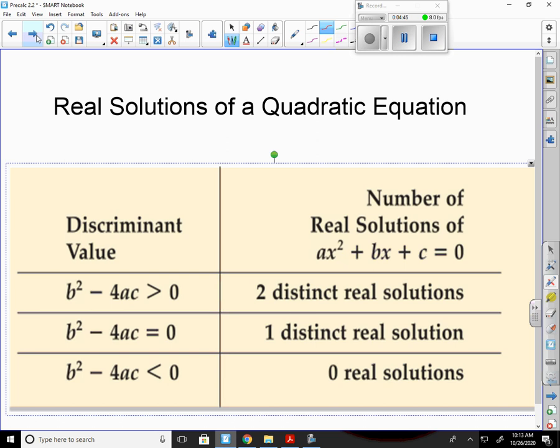If it's equal to zero, then there's only one distinct real solution. And if it's less than zero, then there are no real solutions. And so looking at the discriminant first will tell you immediately whether or not you're going to have to come up with an answer. In some cases, there will be no real solutions.